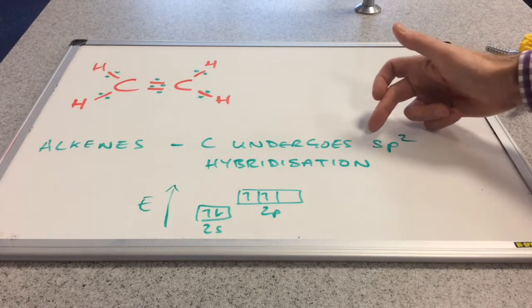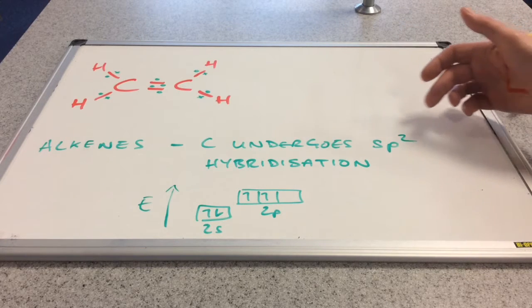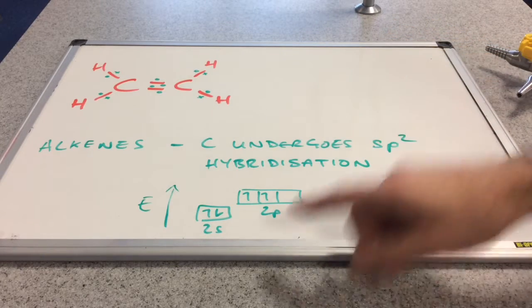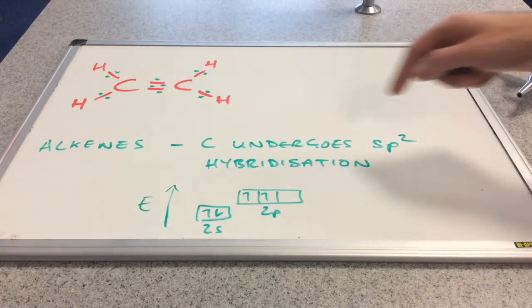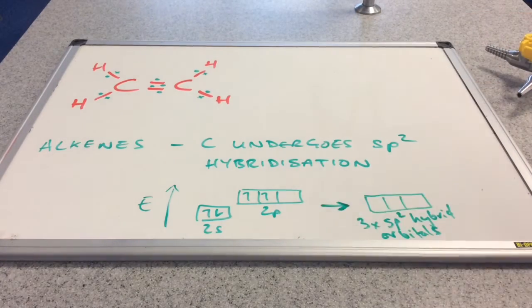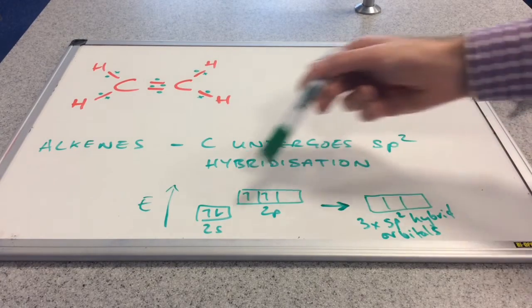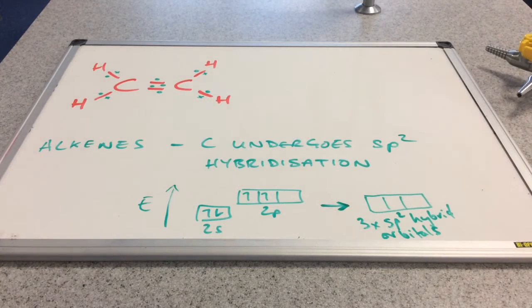So if we just look at the letters involved, sp² hybridisation, we're going to get some overlap, some blending together of the s orbital, this s orbital here, and two of these p orbitals. And that's going to give us these three identical orbitals which have been made from an s orbital and two of the 2p orbitals.